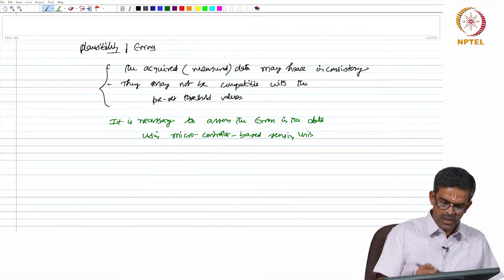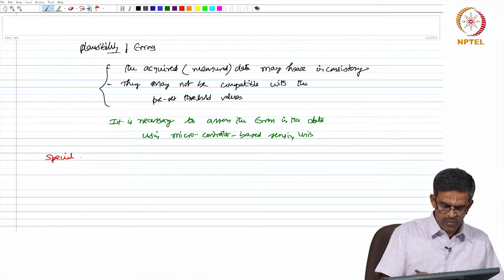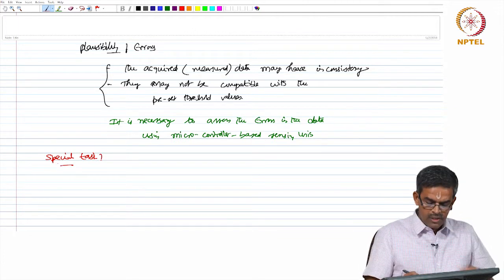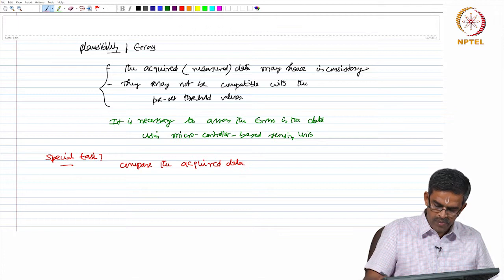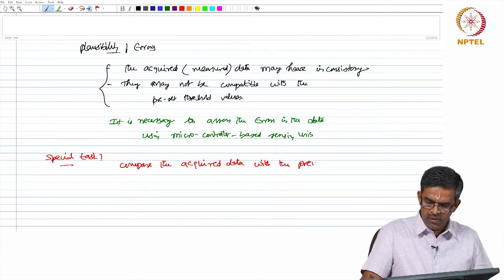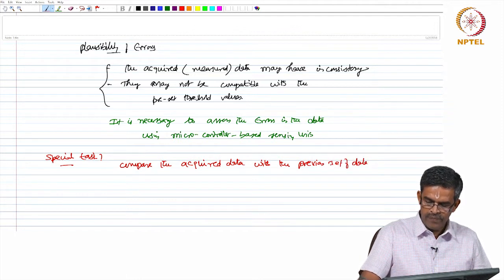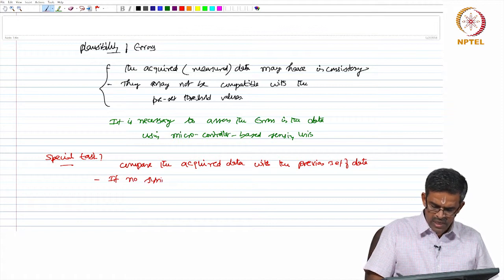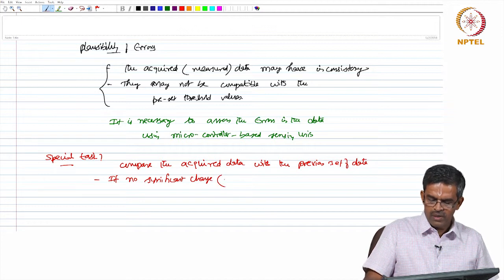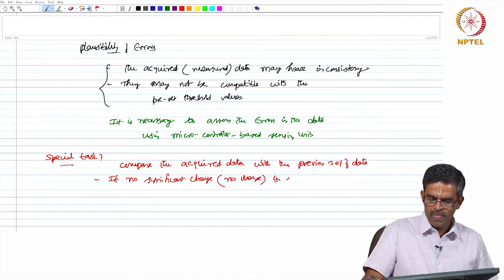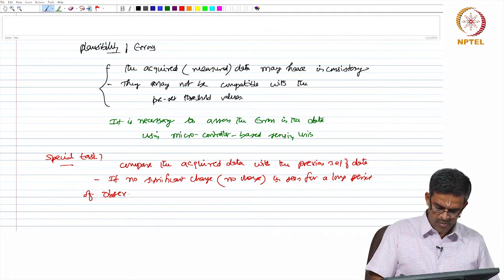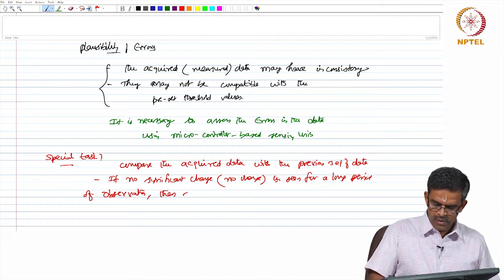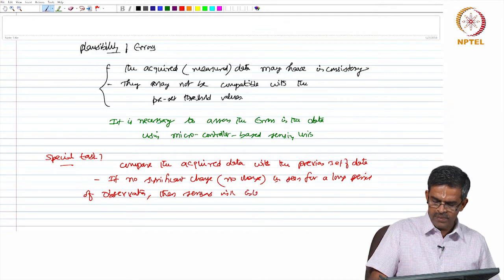What special task will these units perform? These units will compare the acquired data with the previous set of data. If no significant change is seen for a long period of observation, then the sensors will interpret this as wrong data.